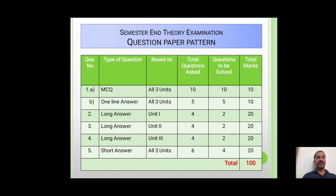The question paper pattern for the theory semester examination: there will be 5 questions, each carrying 20 marks. Question 1 is subdivided into 2 sub-questions. Sub-question A has multiple choice type questions based on all 3 units. The total questions asked will be 10, out of which the student has to solve all 10, each carrying 1 mark, totaling 10 marks.